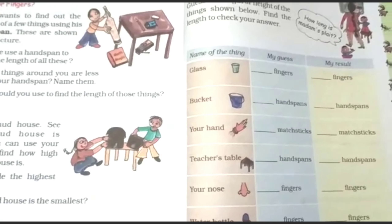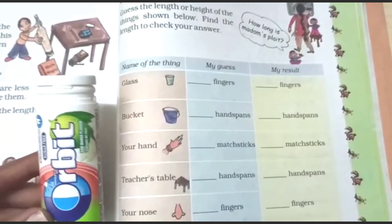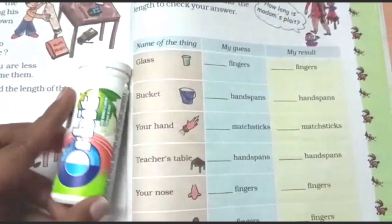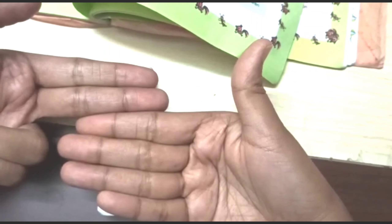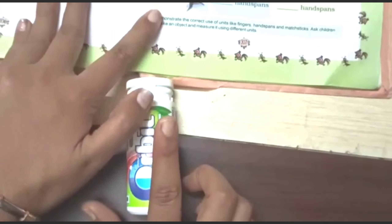Let me show you how to measure with a finger using an example — suppose this is an Orbit chocolates bottle. First, keep it on a plain surface. Now measure with your fingers, placing them from one end of the object. 1, 2, 3, 4 — and there is more space left. Can I put two more fingers? If I try three fingers, my finger goes beyond the end, so I can only put two fingers. That means this bottle is 4 plus 2 — 6 fingers long. Like this, you can measure with your fingers.